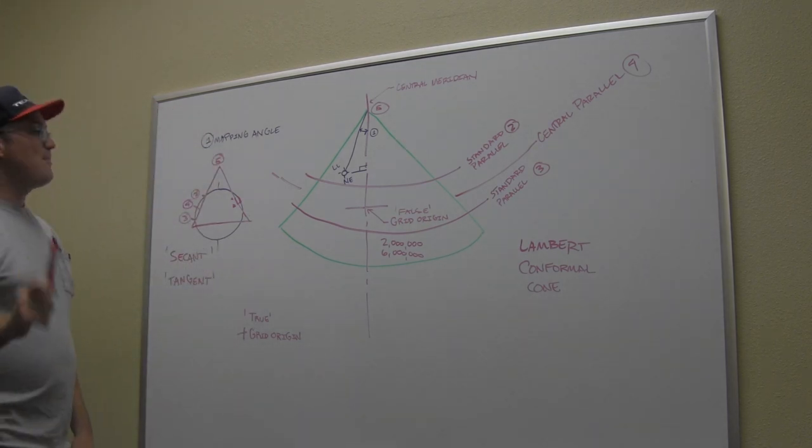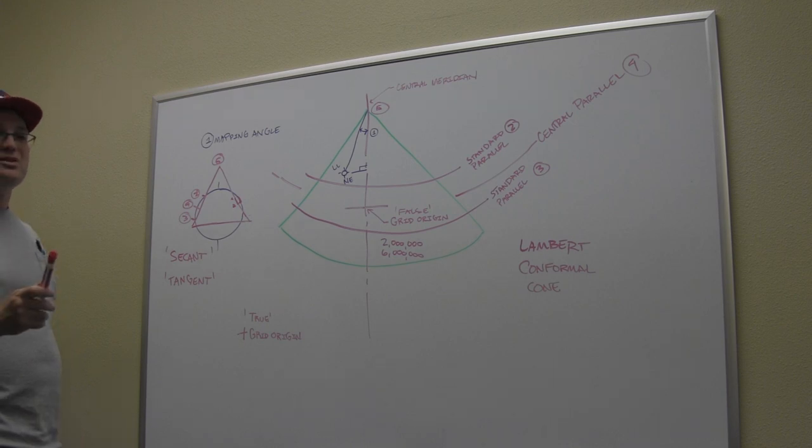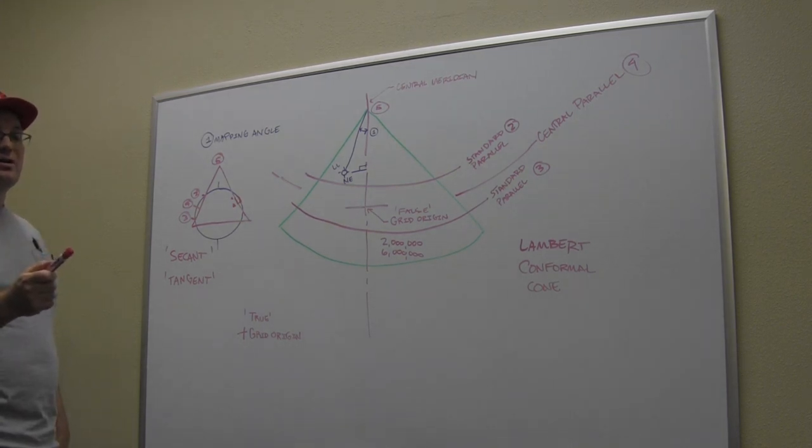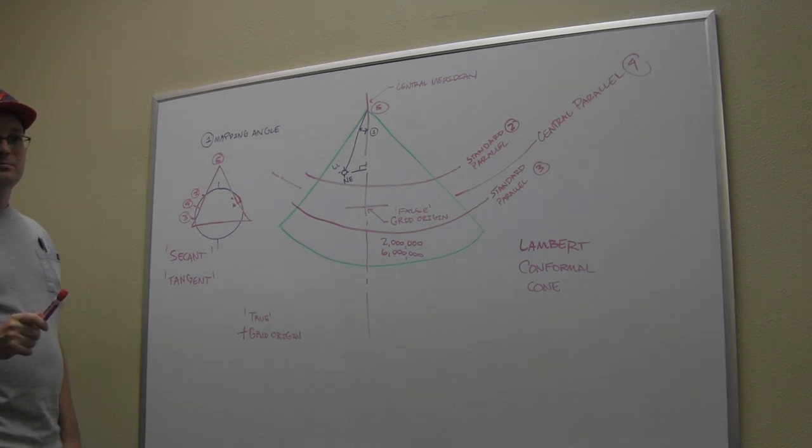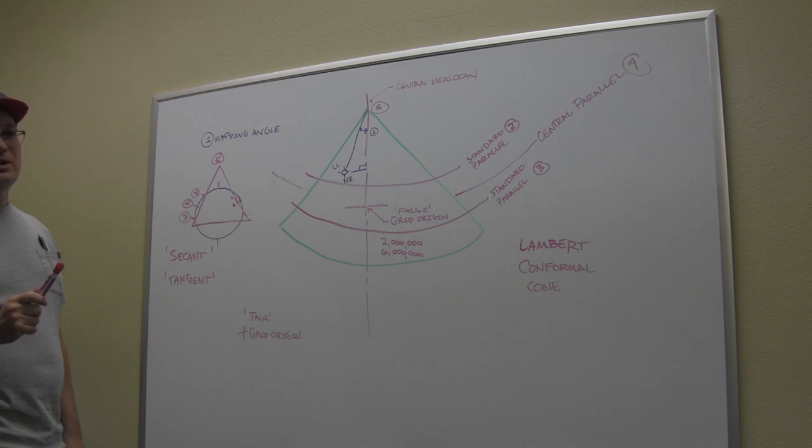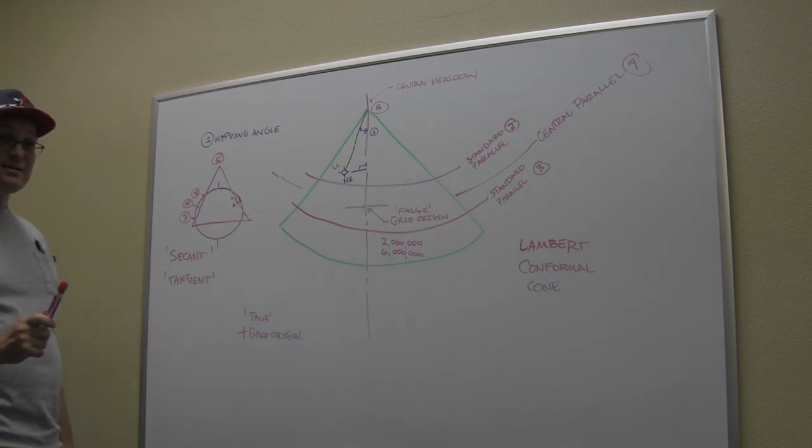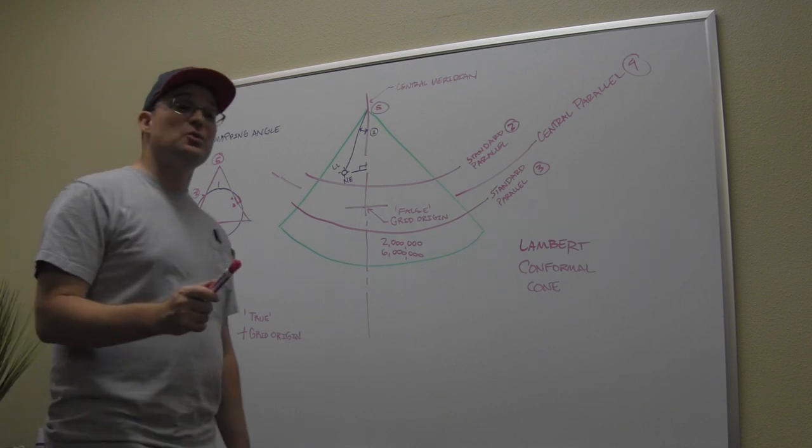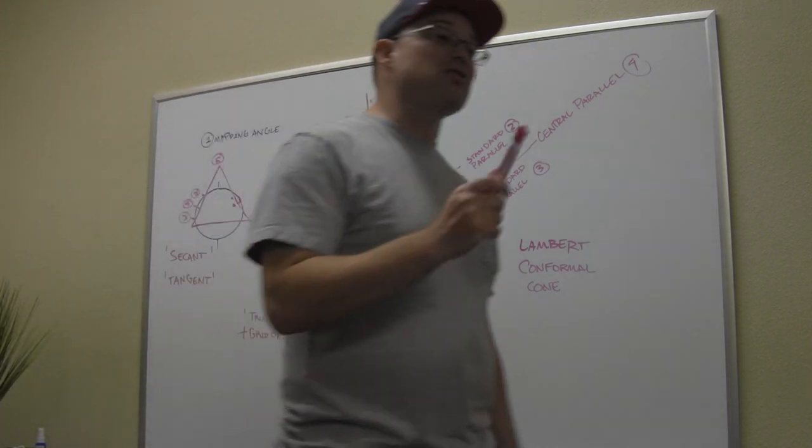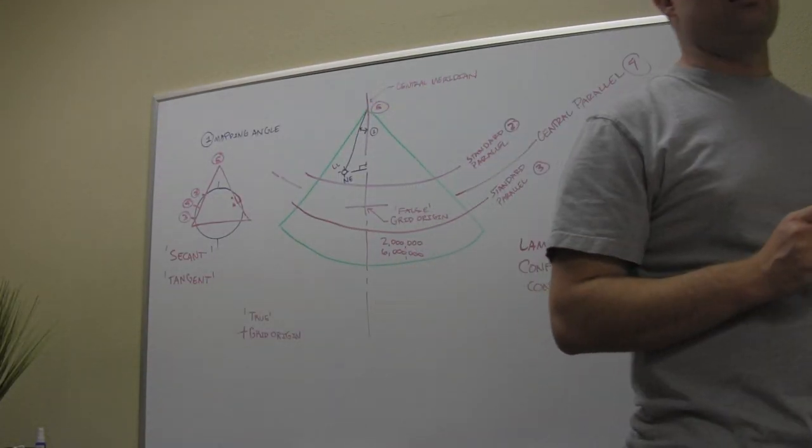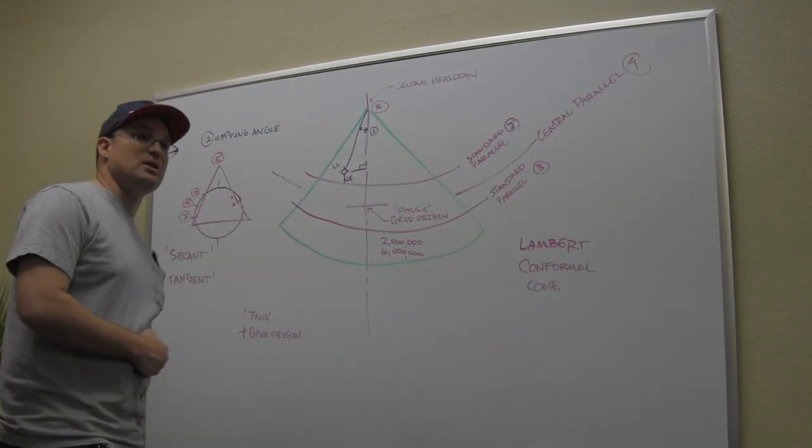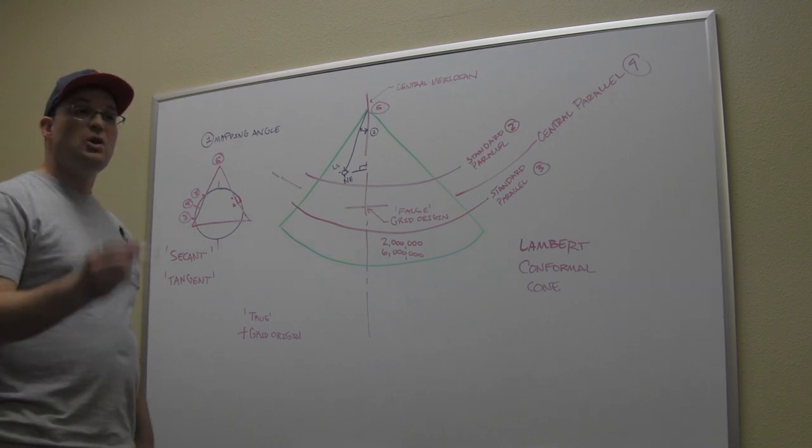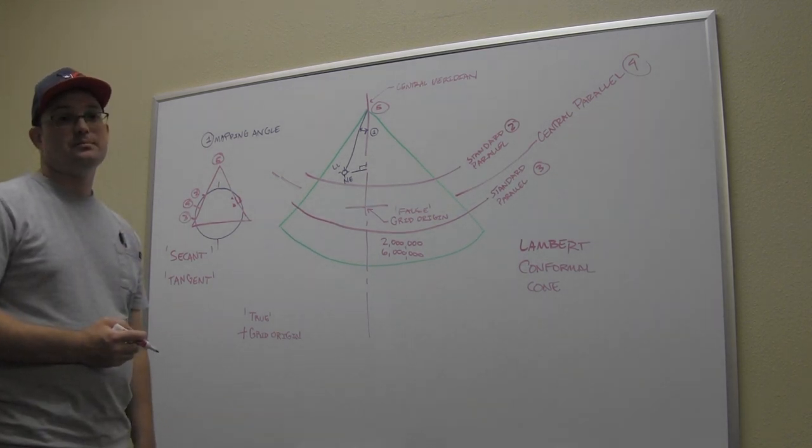Let's talk about the math real quick. I want you to remember this rule. You cannot get a state plane coordinate without a latitude and longitude to start. You have to have a latitude and longitude to get a state plane coordinate. So that means you either got to use GPS, or if you're using a total station, you have to tie into a monument that has a known latitude and longitude on it. Actually, two. You need two monuments.